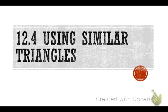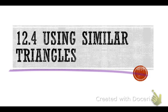We're in section 12.4 today, using similar triangles. The whole concept of today's lesson is triangles are similar if they have two pairs of congruent angles. What does it mean for angles to be congruent? They're the same measure.